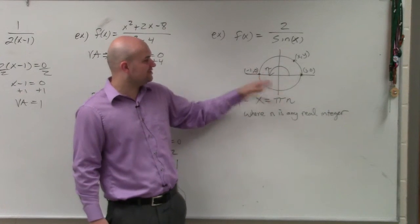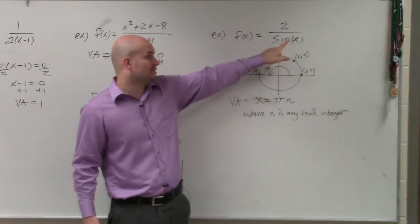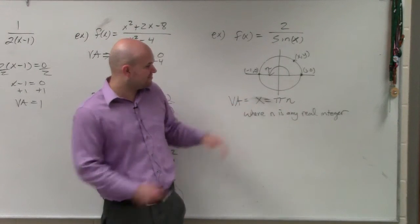In each one of those sections, the sine of those angles is always going to give you a y-coordinate 0, which is going to make this undefined. It's not removable, so therefore it's our vertical asymptote.